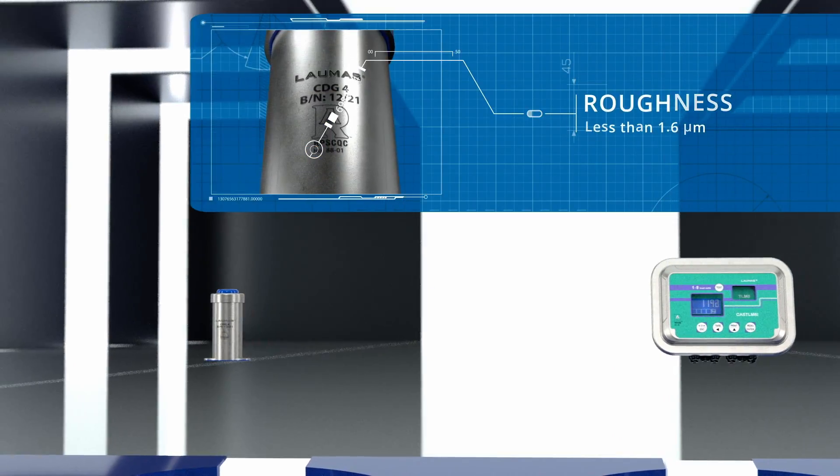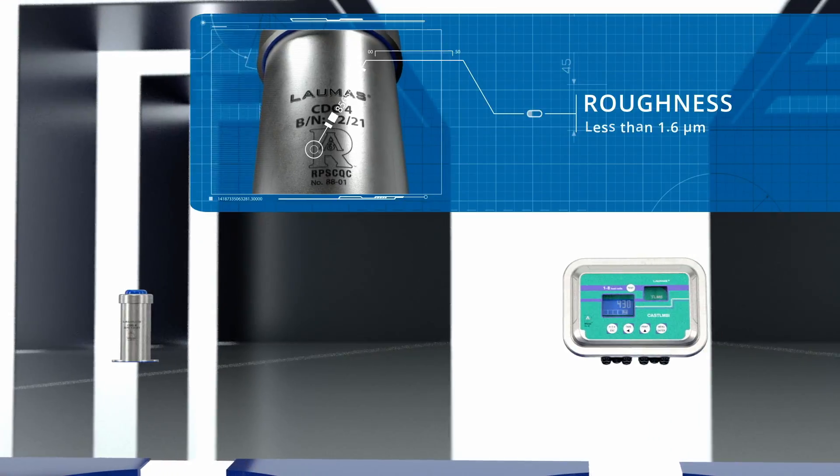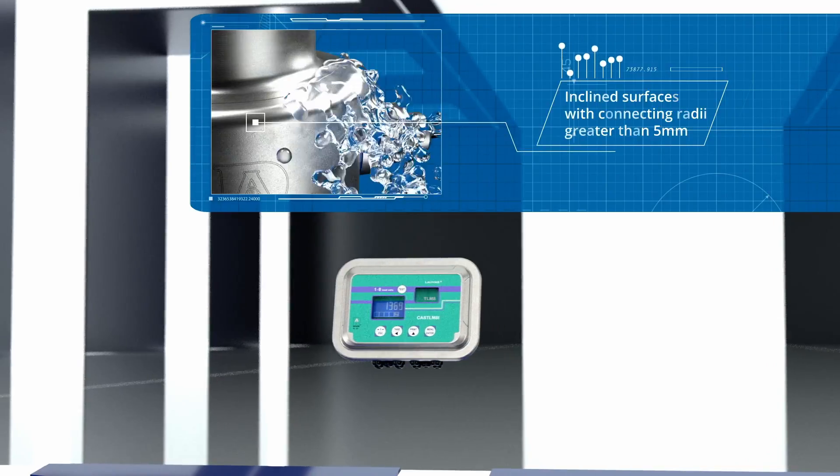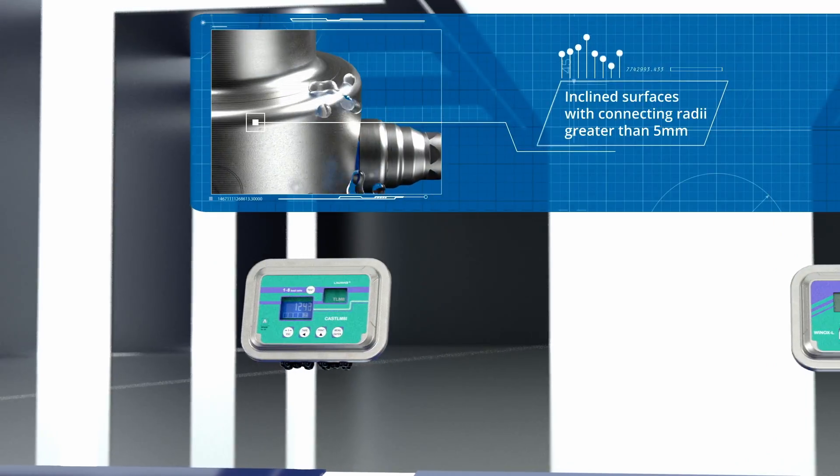They have perfectly smooth surfaces with a roughness of less than 1.6 microns, always inclined and equipped with drainage angles, which allow dirt to slide away with ease.